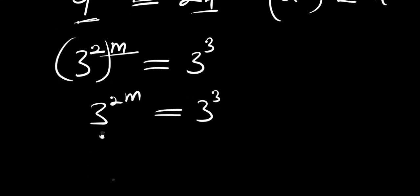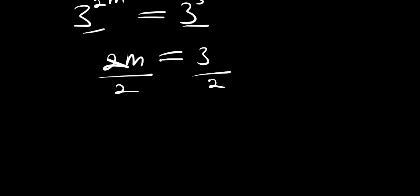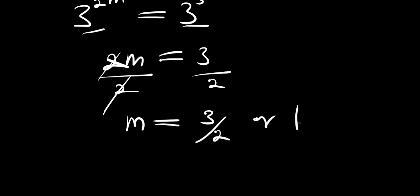Since the bases are now the same, we compare the exponents: 2m equals 3. In order to solve for m we divide both parts by 2, and we get m equals 3 over 2, or 1.5.